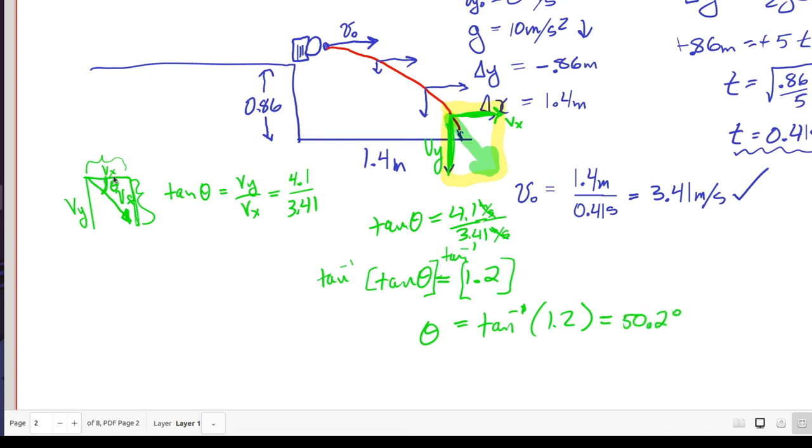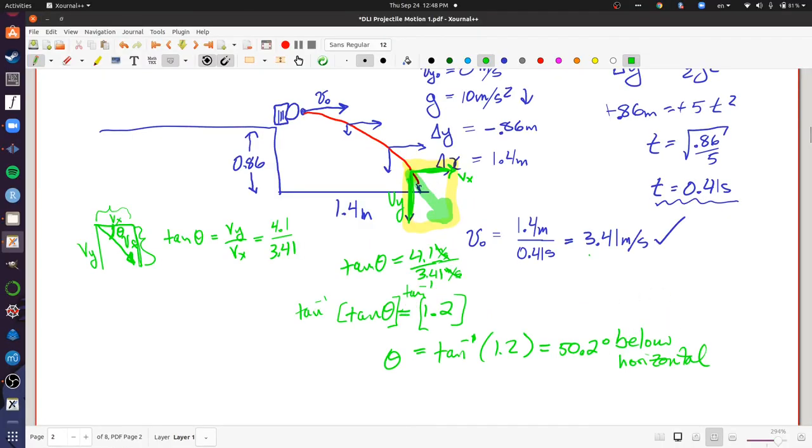And that's measured below horizontal. I always like to be explicit with the way I'm measuring the angle below horizontal. If we wanted the angle from vertical, it is just the complement of this. So it would be 39.8 degrees. So there we have both the initial speed and the final angle.